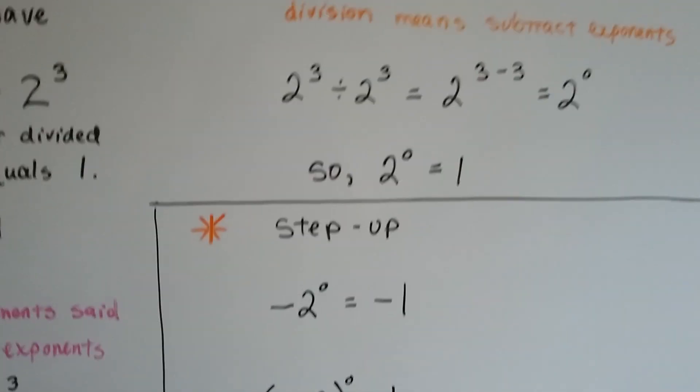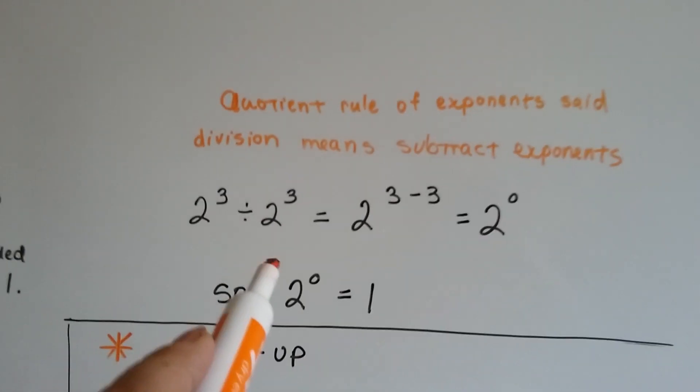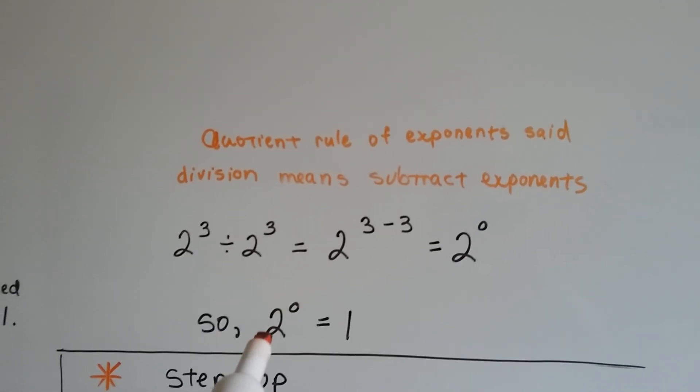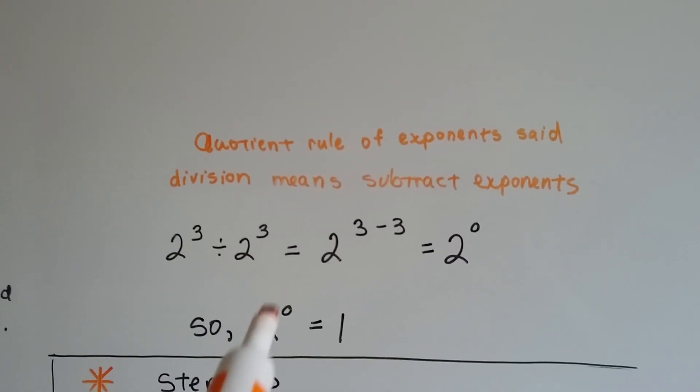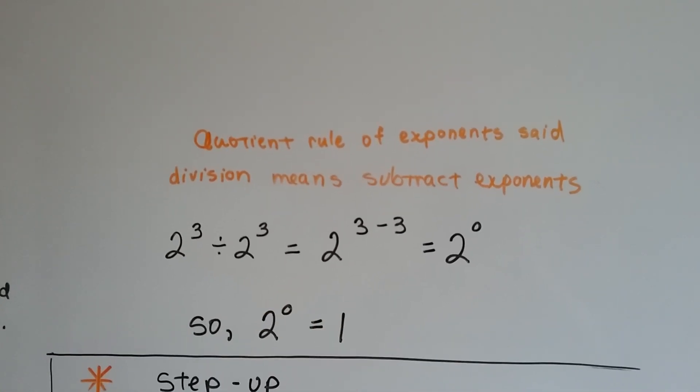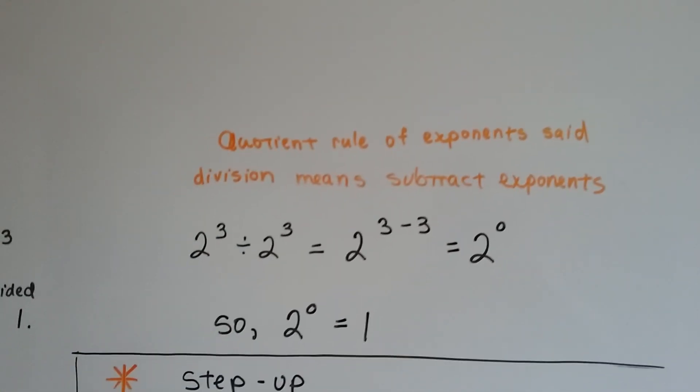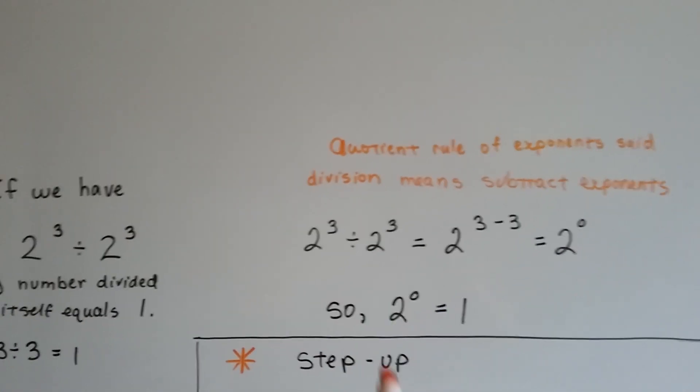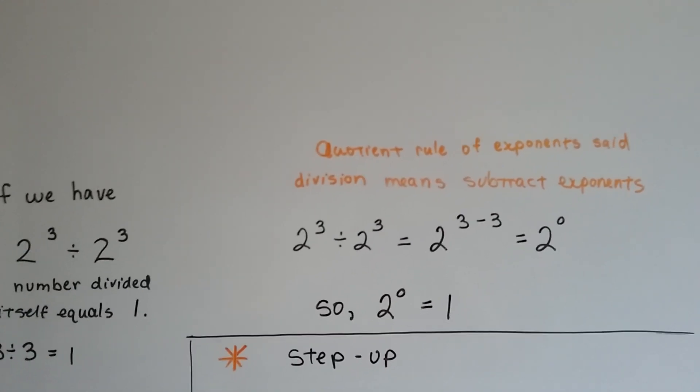So remember that any time you see any number that has a zero power, a zero exponent, it's going to equal 1. Whether you're adding, subtracting, multiplying, or dividing, it's going to equal 1. But it can't have a zero for a base.